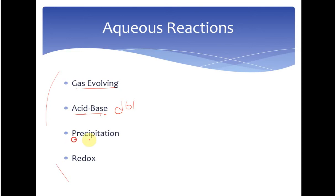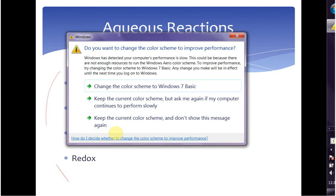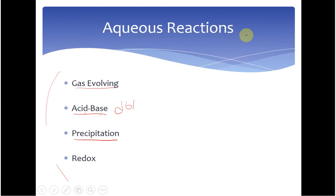For precipitation reactions, you're going to see the formation of a solid as a product. You're not going to see a big chunk of solid fall out, but you're going to see your solution get kind of cloudy — like muddy water. Eventually the mud will settle down and you will get a solid at the bottom.